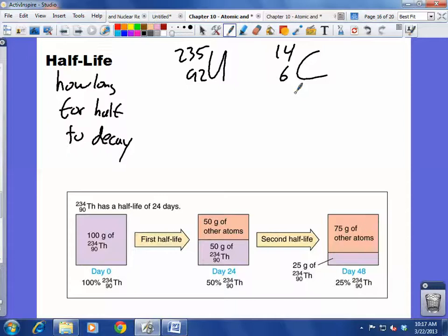What this means is that if you start with 100 grams, after 24 days, you'd be left with 50 grams. After another 24 days, you'd be left with 25 grams. Then 12.5. Then 6.25. And you keep going. You keep decreasing by half.